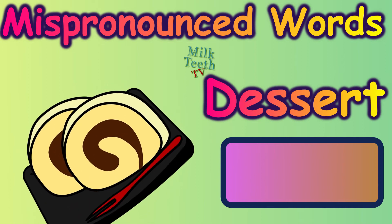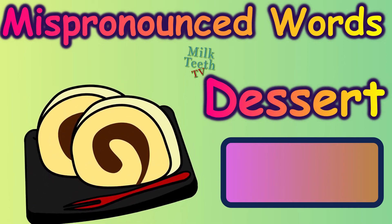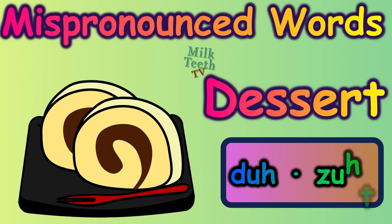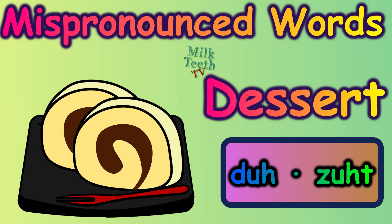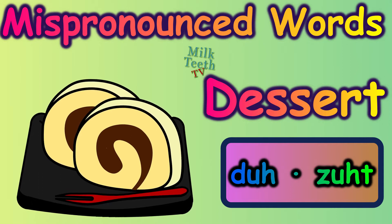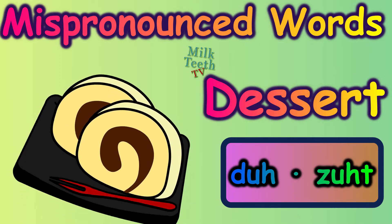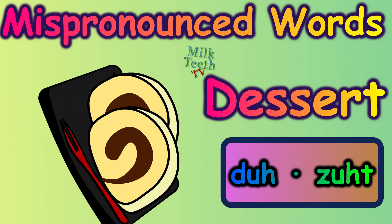And how do we go about this one? This is a sweet dish we usually eat after dinner. It is a dessert — not a desert, which is a sandy place without rain. It's a dessert. The stress is upon the double S. A dessert.